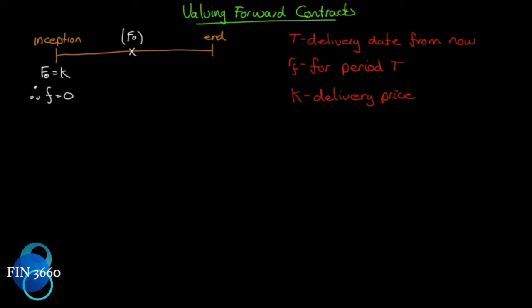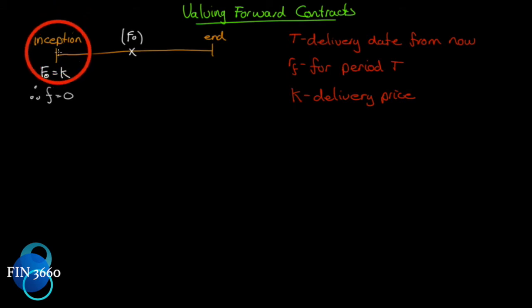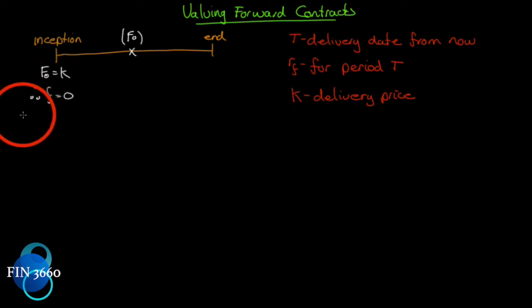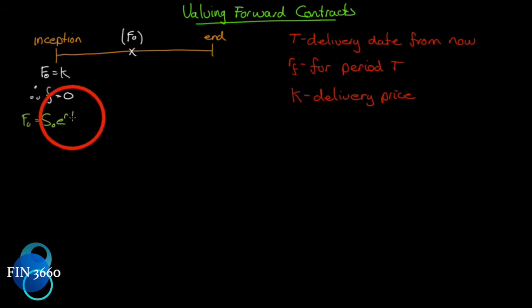To do this, we're going to take two separate contracts and compare them together. Once we get the logic of that comparison, we'll drop the idea of them being two separate contracts and just say it's one contract priced at several points in time. At inception, we look at a particular asset, enter into a forward or futures contract, calculate the fair value, and get a futures price — which is a function of the spot price and the cost to carry that asset to the end of the period.